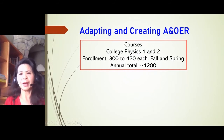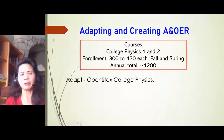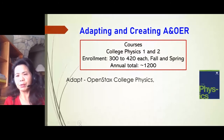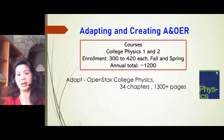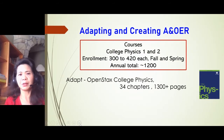In adapting the OER, I switched from a publisher's textbook to the OpenStax College Physics textbook. This book is enormous — it has 34 chapters and more than 1,300 pages. Of course, I cannot use all of them, so I selected only the relevant chapters.